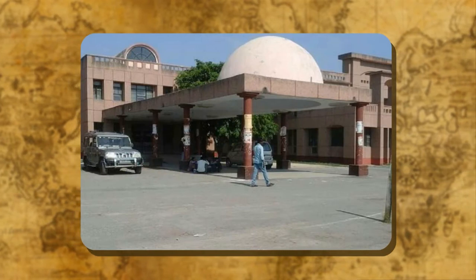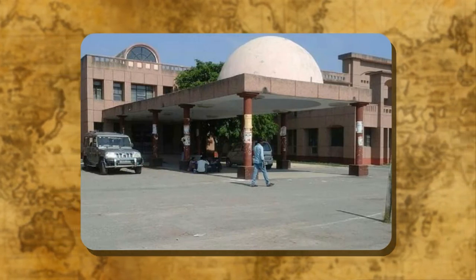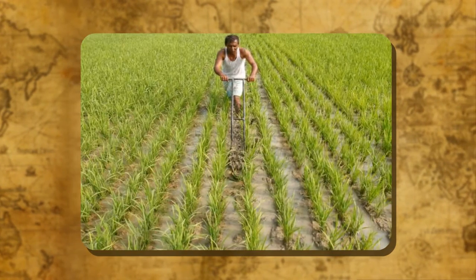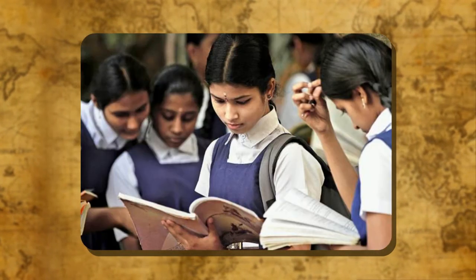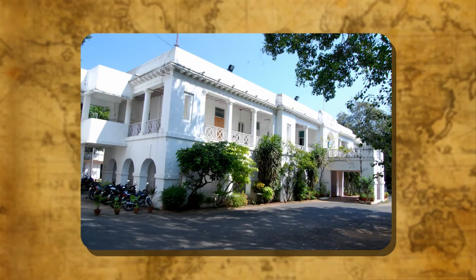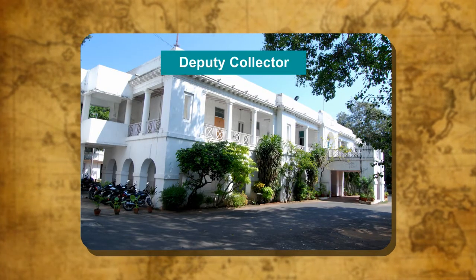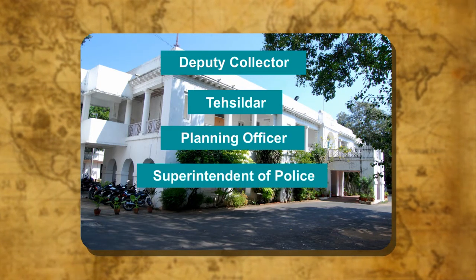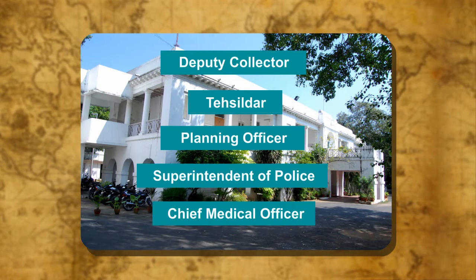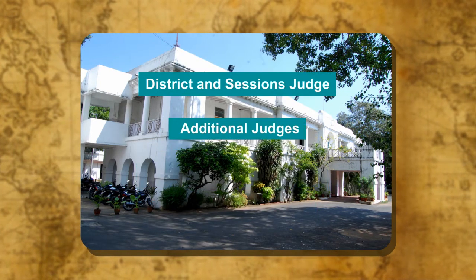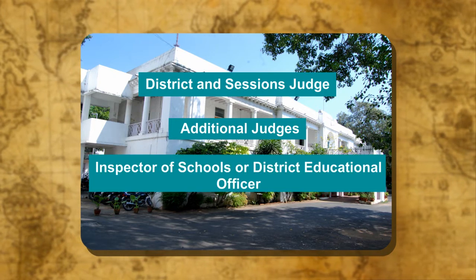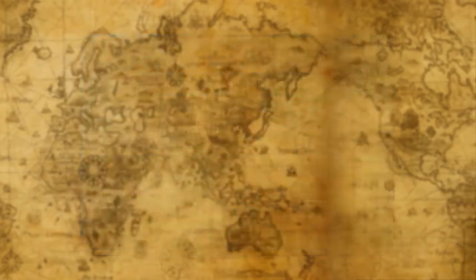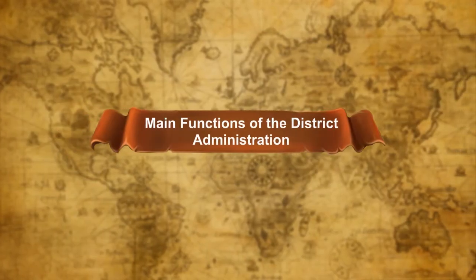A district is also the unit of administration for various other departments such as Police, Co-operative Societies, Agriculture, Education, etc. Some other important officials of the district are Deputy Collector, Tehseel Dar, Planning Officer, Superintendent of Police, Chief Medical Officer, District and Sessions Judge, Additional Judges, Inspector of Schools or District Educational Officer, and Agricultural Officer.